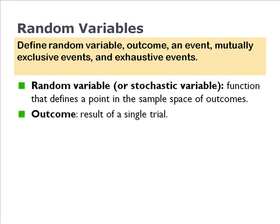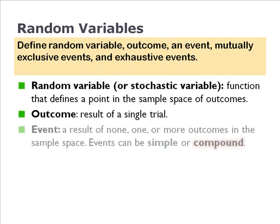The outcome is a result of a single trial. An event is the result of zero, one, or more outcomes in the sample space. So see the subtle difference there? An event can include no outcomes, one outcome, or several outcomes. An event can therefore be simple, if it represents one outcome, or compound, if it represents multiple outcomes.